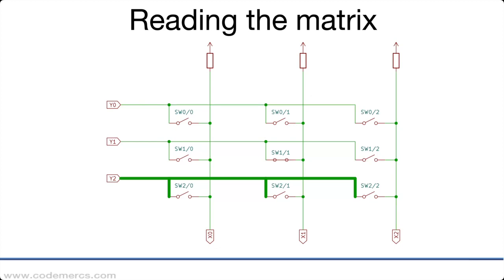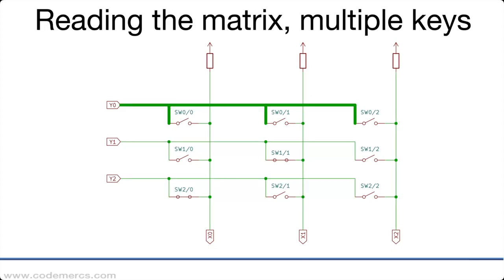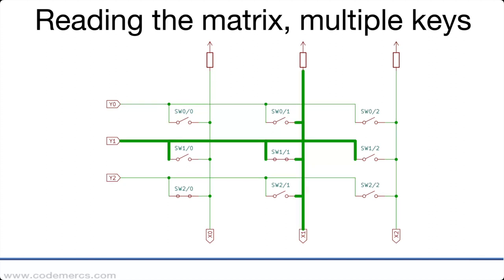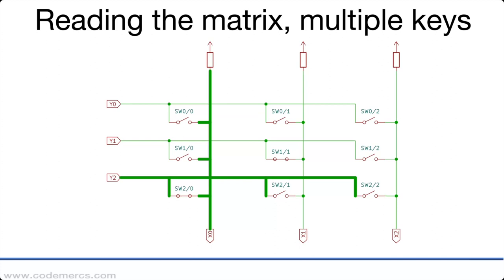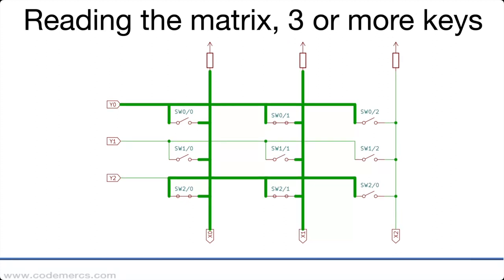When we have more than one key pressed that still works. On y zero there's still no key active so we get high levels on all of the x lines. On y1 there's one key pressed on the coordinate x1 y1 so we get a reaction on the x1 line which gets pulled low. On y2 there's another key pressed and we get a reaction on the line x0. So the controller knows that also the key on x0 y2 is currently active.